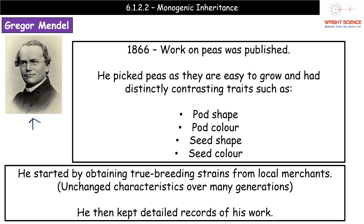Before he started his work, he needed a good solid baseline — he needed to be sure of these plants. So he got what we call true breeding strains from the local merchants. We refer to them as true breeding strains because these are characteristics that aren't going to change over many generations. If you had green pea plants, they would have been green for many generations and will produce green pea plants as well. He then kept very detailed records of his work — the sign of a good scientist — which provides evidence to formulate hypotheses and draw conclusions.